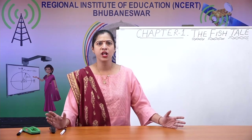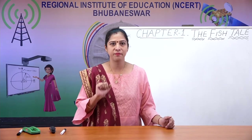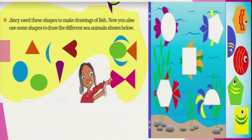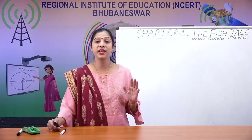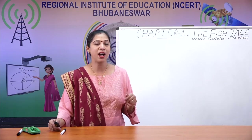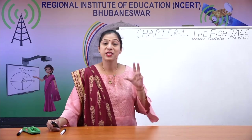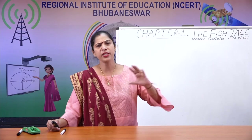Jinsi used shapes to make drawings of fish. You can also use shapes to draw different sea animals shown in your book. I have taken some examples where a circle, hexagon, pentagon, rectangle, and semi-circle are used. You can make many different things using these shapes. You have also heard of tangrams, where shapes are used to make lots of different things — not only fish.